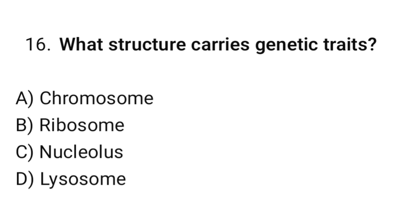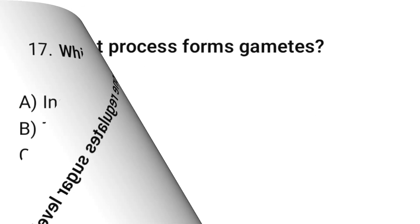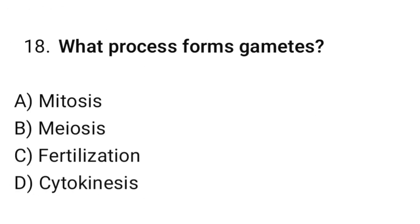Question number 16: What structure carries genetic traits? The correct option is A — Chromosome. Question number 17: Which hormone regulates sugar level? The correct option is A — Insulin. Question number 18: What process forms gametes? The correct option is B — Meiosis.